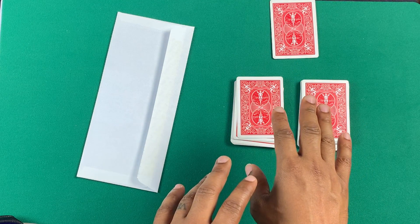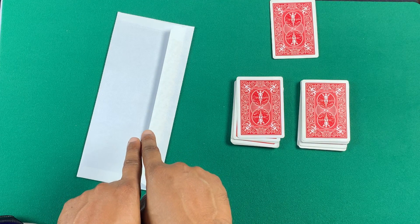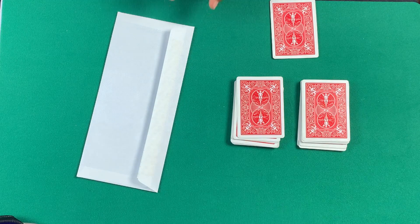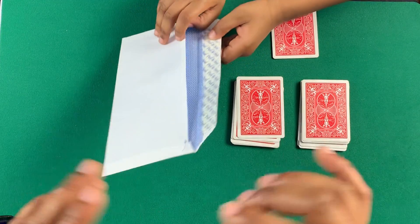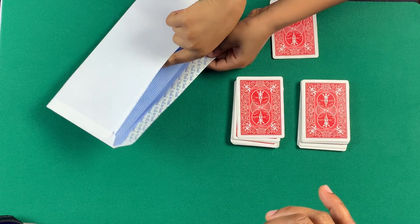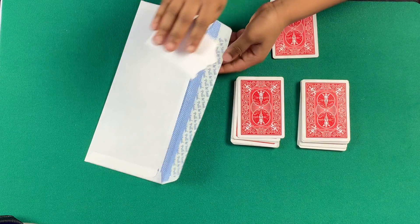Now, before you turn over that card, I just want to let you know that I wrote a prediction inside of this envelope. Alright? So, do me a favor. Open up this envelope. Pull out the prediction. And the prediction is actually folded. Don't unfold it yet, but just pull it out. Got it? Just sit it right on top of the envelope.